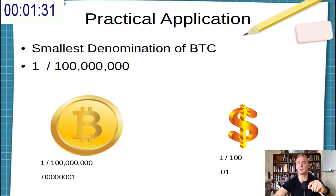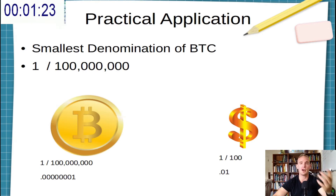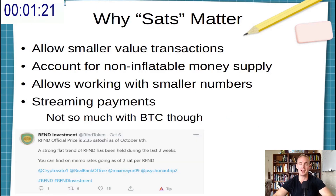If we compare that to something such as the US dollar, the smallest unit of a dollar is a cent, and a cent is defined as one over one hundred of a dollar, or $0.01.